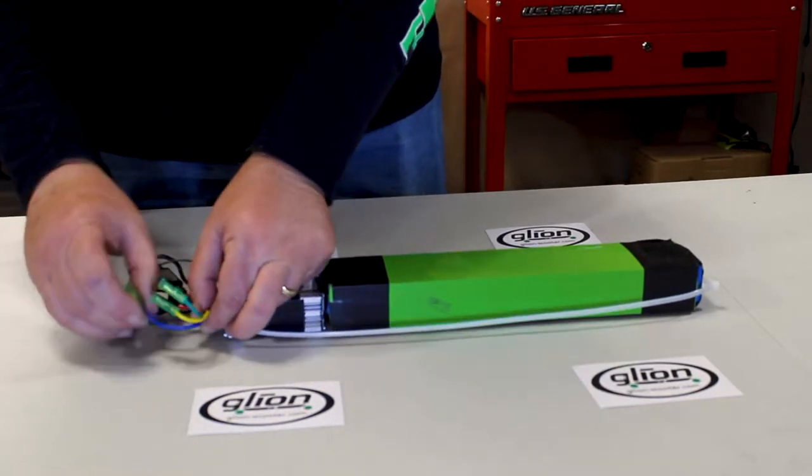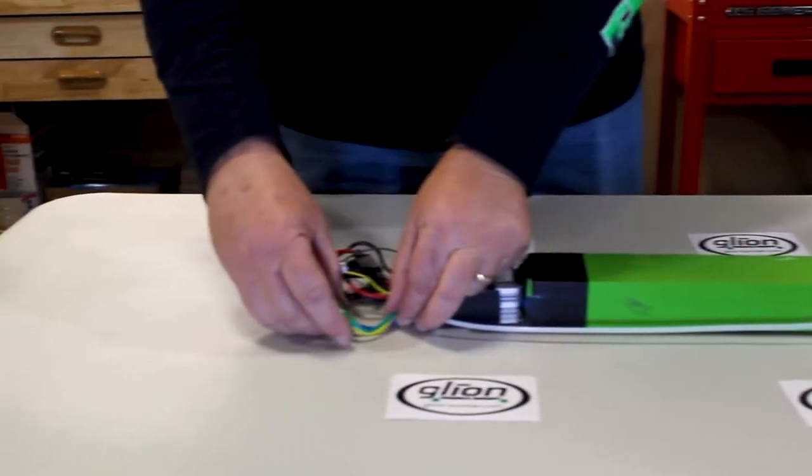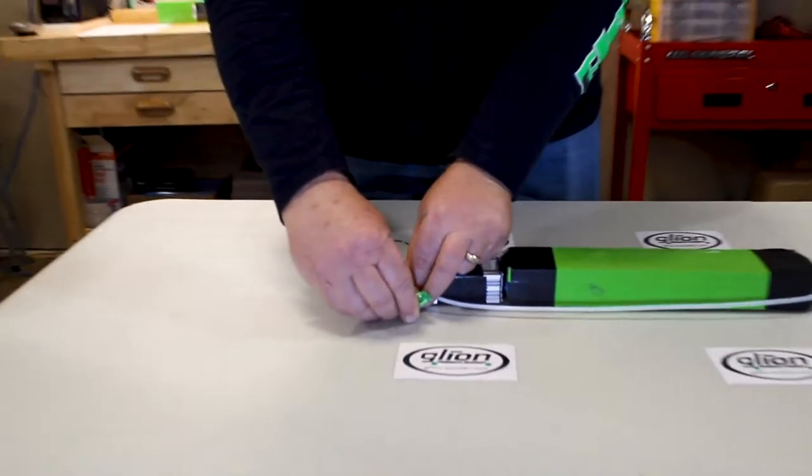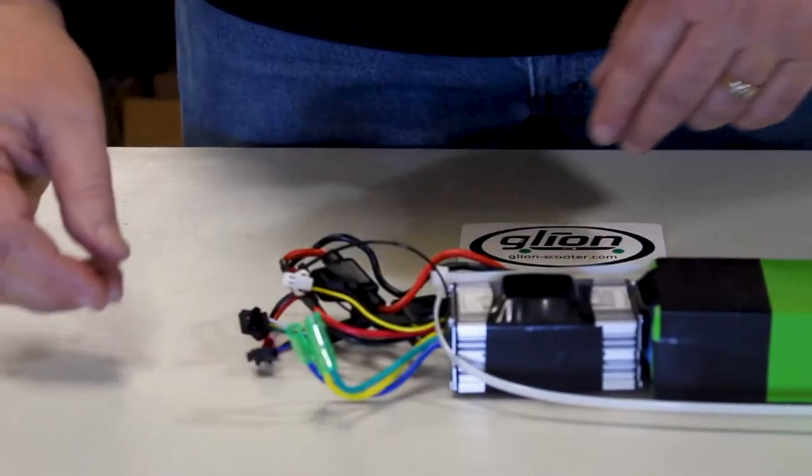We have a blue, a green, and a yellow wire. Those connect to the wiring that runs down through the frame back to the motor on your scooter.